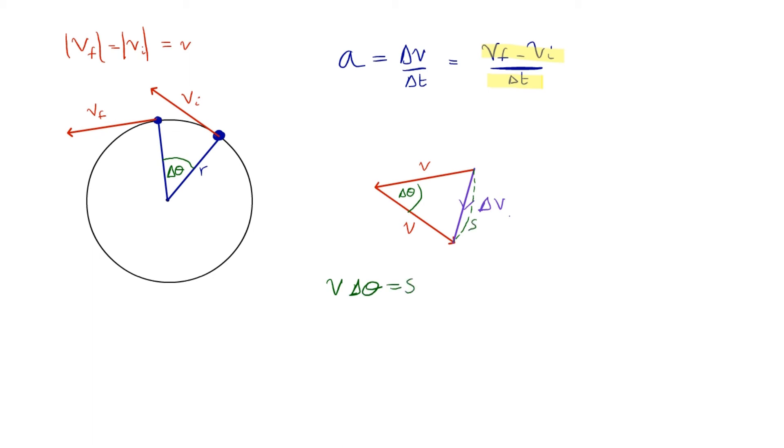So I can write down v times delta theta must be equal to s. Yes, there's no difference between that and the drawing we had on the last page. But of course, because this angle is exceedingly small, then that's also going to be equal to delta v.